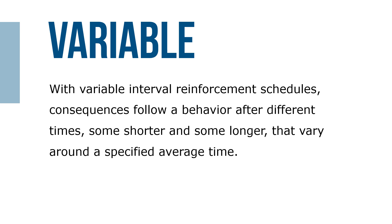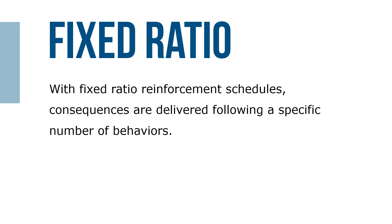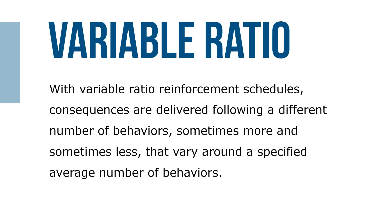With variable interval reinforcement schedules, consequences follow a behavior after different times — some shorter and some longer — that vary around a specified average time. With fixed ratio reinforcement schedules, consequences are delivered following a specific number of behaviors. With variable ratio reinforcement schedules, consequences are delivered following a different number of behaviors — sometimes more and sometimes less — that vary around a specified average number of behaviors.